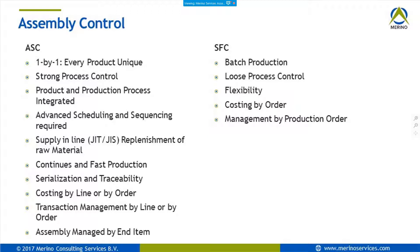I want to highlight the differences between Assembly Control (ASC) and SFC. Some things I mention for assembly control are also applicable to SFC, but it's important to highlight them. Assembly control is basically one-by-one flow production, where every product is more or less unique, with a strong focus on the process, and where product and process are integrated more strongly than with SFC.